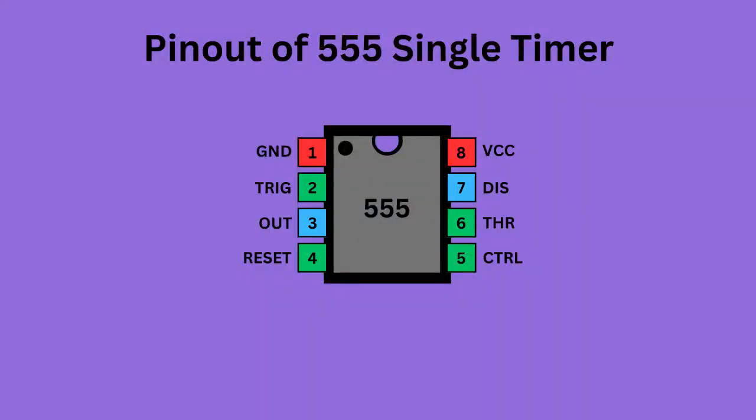The 555 timer IC comes with eight pins. There is a notch or a dot on the chip's body. Pin one, located at the top left, serves as the ground or ground supply. Pin two, the trigger pin, initiates the timing interval in mono-stable and astable modes. Pin three serves as the output, providing the timer's operational result depending on its mode: mono-stable, astable, or bi-stable.